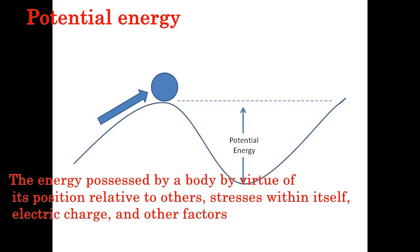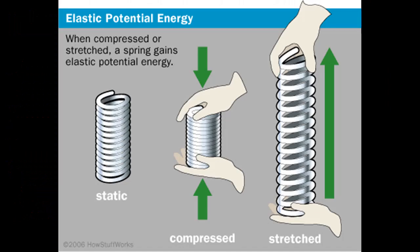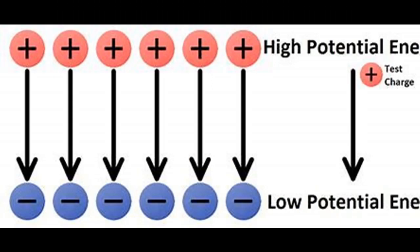Types of potential energy includes the gravitational potential energy, the energy of an object depending on mass and distance from the other object, the elastic potential energy, and the electric potential energy charge.